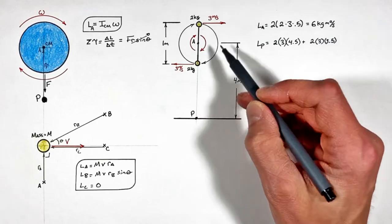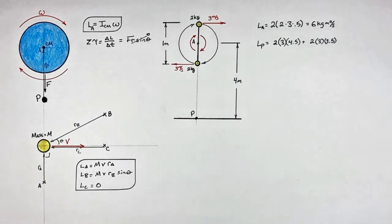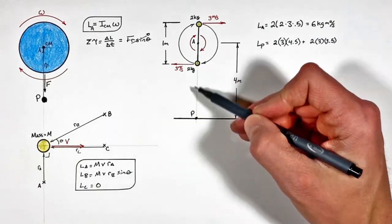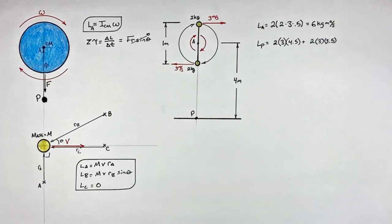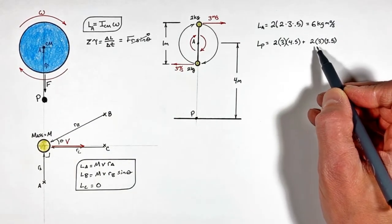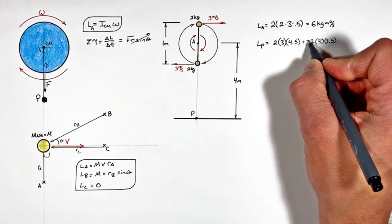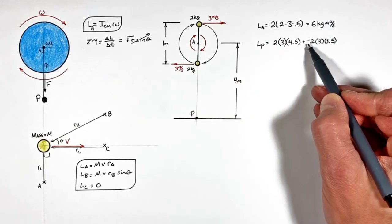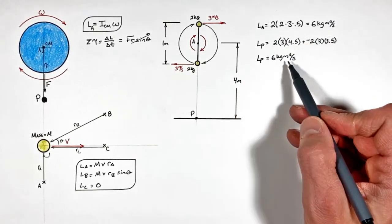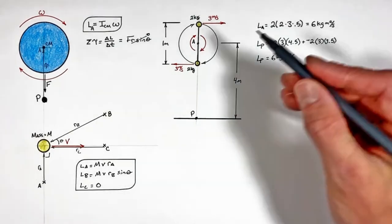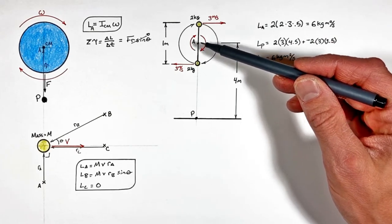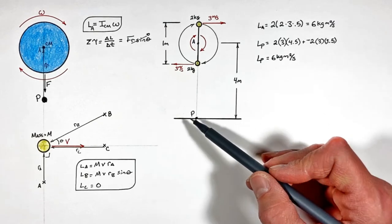Relative to point P, this top mass is moving to the right, which would produce an angular momentum clockwise around point P, or into the page using the right-hand rule. Looking at the bottom mass, it's moving to the left, so that's going to be producing an angular momentum out of the page. Because these two angular momenta are in opposite directions, we need to account for the fact that the angular momentum of the bottom mass is going to be in the negative direction. But if you work the math out on this, you'll find the angular momentum around point P is six kilogram meters squared per second. This proves that the angular momentum of a rotating body around some axis of rotation is the same as the angular momentum of that rotating body around any point in space.